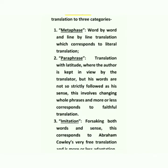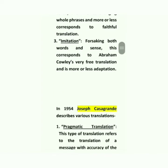In the preface to Ovid's Epistles in 1680, John Dryden reduces all translations into three categories. The first is metaphrase — this is word-by-word and line-by-line translation which corresponds to literal translation. The second is paraphrase, which means translation with latitude where the author is kept in view by the translator but his words are not so strictly followed as his sense; this involves changing of whole phrases and more or less corresponds to faithful translation. The third is imitation — forsaking both words and sense — this corresponds to Abraham Cowley's very free translation and is more or less adaptation.